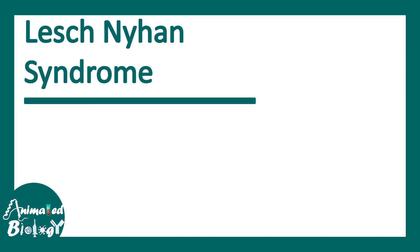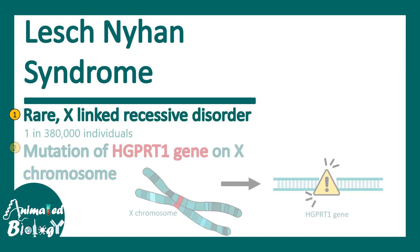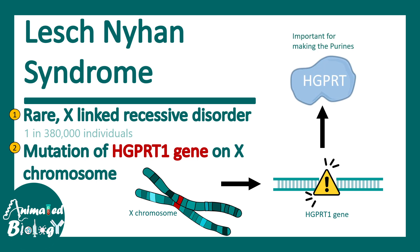Lesch-Nyhan syndrome is a rare X-linked disorder which is due to the mutation of the HGPRT1 gene on the X chromosome. The HGPRT1 gene is responsible for expressing a very important protein which is the HGPRT enzyme — hypoxanthine-guanine phosphoribosyltransferase. This enzyme is important for making purines, which are the building blocks for nucleic acids like DNA and RNA.